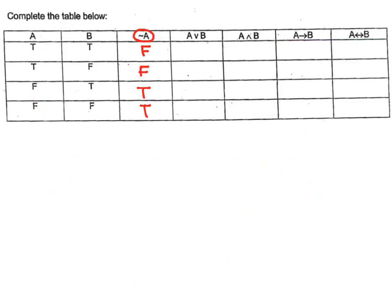Now, A OR B — you see this small symbol for OR — means as long as one of them is true, it's okay. Both of them are true, so it should be true. In the second row, this one is true so it should be true. Third row, this one is true so the entire statement is true. The last one is false because there is no truth.